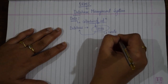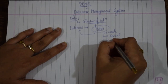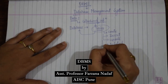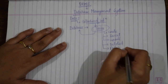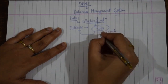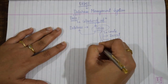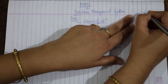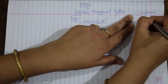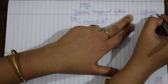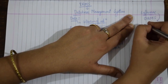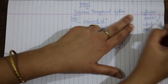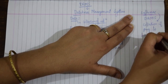Now to create a database, we need to create tables. You need to insert values into that table, you need to update values, sometimes you need to delete unwanted data, and sometimes you need to fetch a particular record. So to perform all these operations on a database, you require a software called a Database Management System.